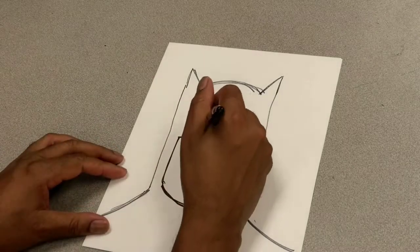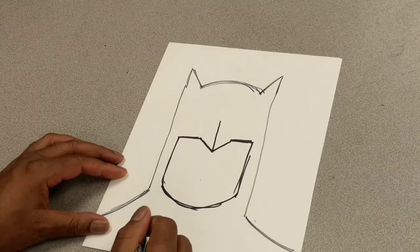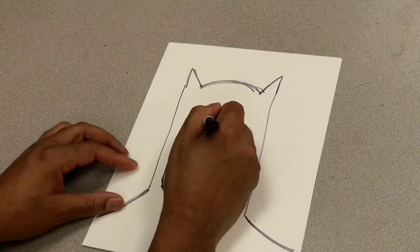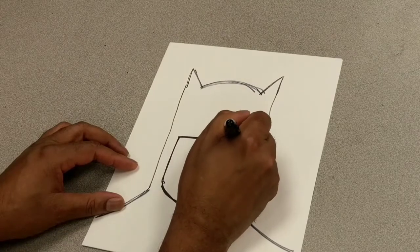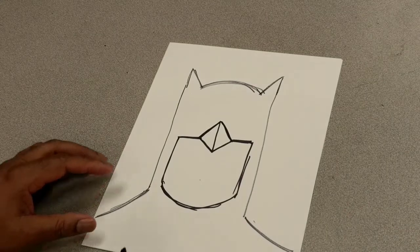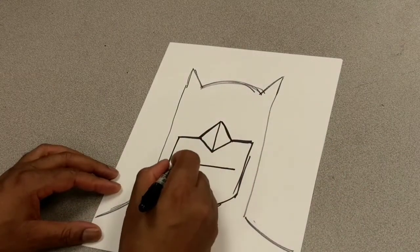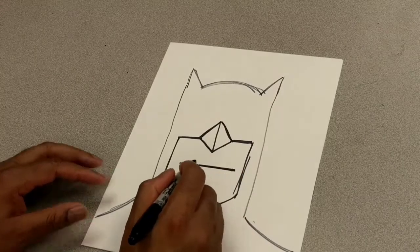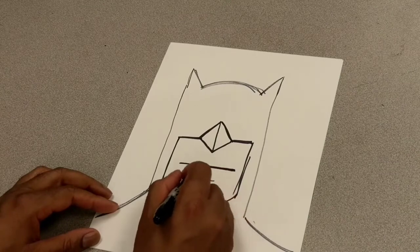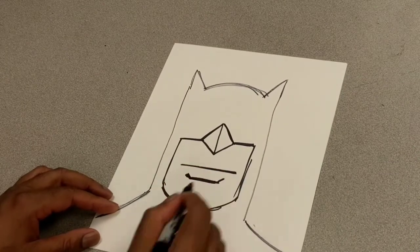Then, we're going to go up like this and make a line. Looks like an arrow. See the arrow shape? Then, we're going to go like this. Then, we're going to draw a line for his mouth. Then, we're going to draw another line here for his chin.